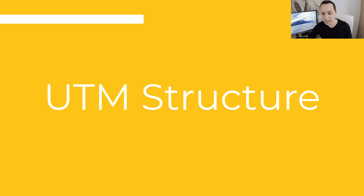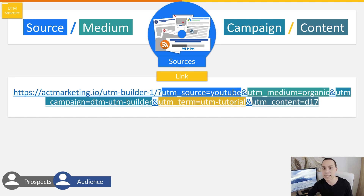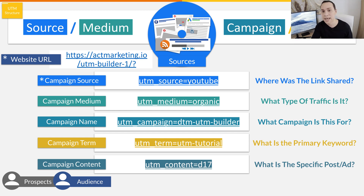Now let's talk about what a UTM link is and why you should make a link that looks something like this. We'll color code it and break it down by steps. The first part of this tracking link is your source — this is where your traffic is coming from. Is it coming from YouTube, from a blog, or from Google Search?